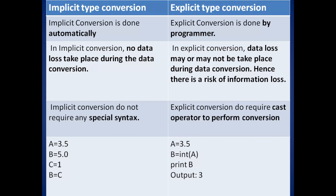Earlier B was having a value of float type, but now B is holding the value of C, which is 1, and it has become integer type. So this is an example of implicit type conversion.